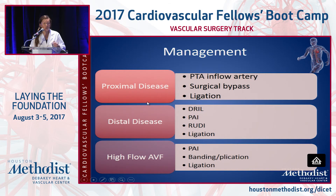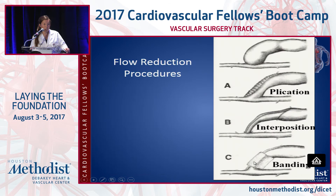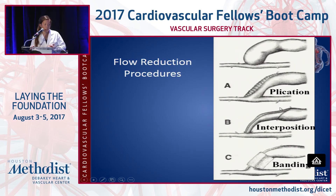For different areas of disease: if it's proximal disease, do your angiogram — you may be able to angioplasty a proximal stenosis, or bypass. All of these types of symptoms you can ligate if you absolutely need to, worst case scenario. For distal disease, you can do a DRIL, proximalization, or RUDI. For high flows, you can decrease flow by banding or plication — many ways to do it. You can place a dilator and use 2-0 silk to tie it off tighter, or make an incision and plicate it, or put a band around it.